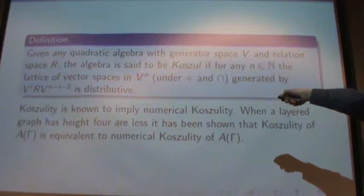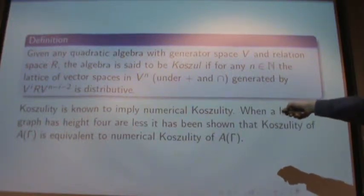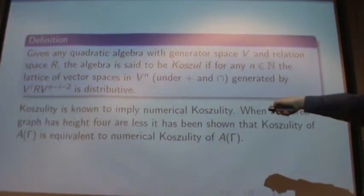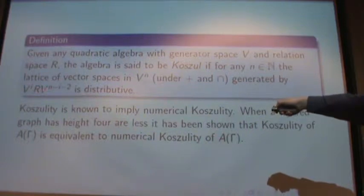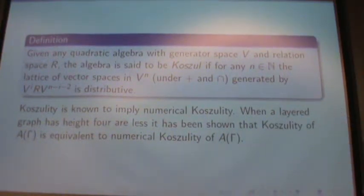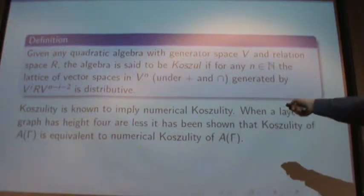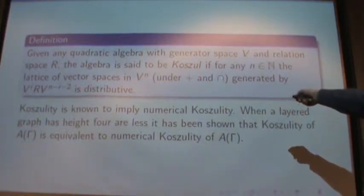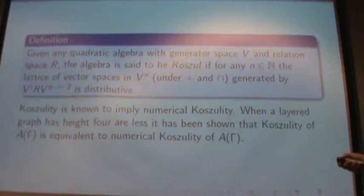In the vector space V to the n, we're going to form our lattice where the generators are V to the i times R times V to the n minus i minus 2. And since it's a lattice, we need a meet and a join.